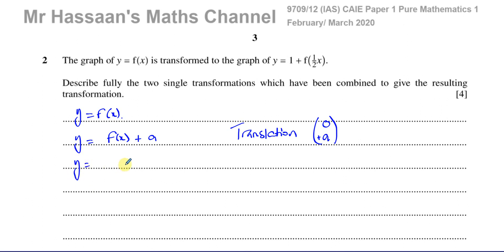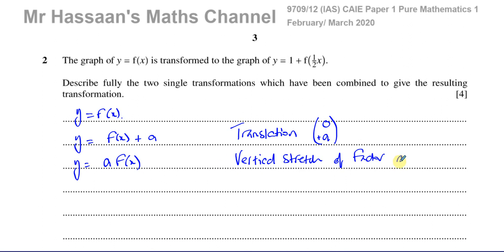Continuing with things outside the function: if you have a times f of x, where you multiply the whole function by a, again it's only the y coordinates that are affected — the x coordinates remain the same, and the y coordinates are multiplied by a. So basically this is called a vertical stretch, with stretch factor a. That's a vertical stretch of factor a. These changes take place outside the function — the whole function is multiplied by something or you're adding something to it — so these are all causing vertical movements.